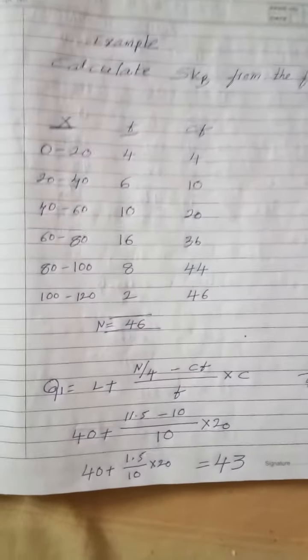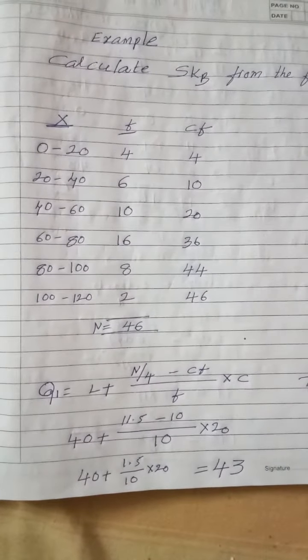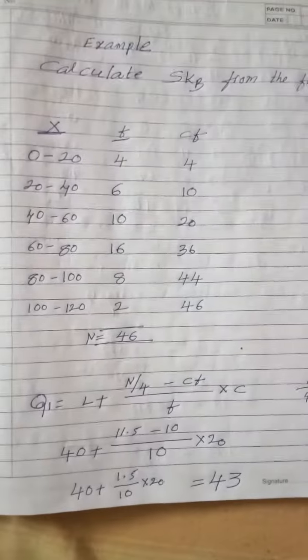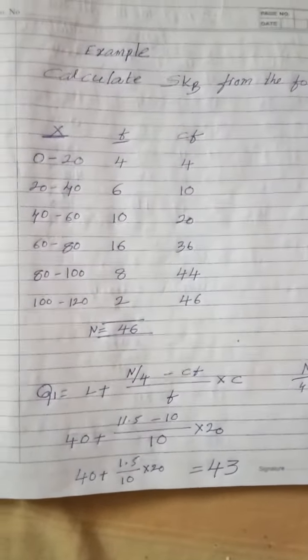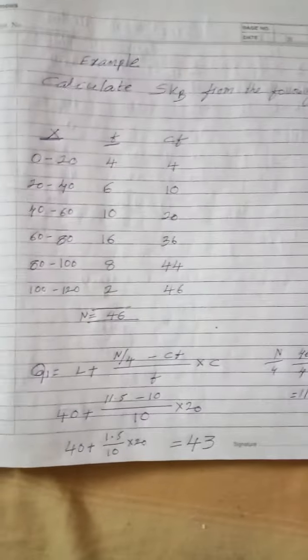So X is 0 to 20, 20 to 40, 40 to 60, 60 to 80, 80 to 100, 100 to 120. We will find median, Q1, Q3, and CF.